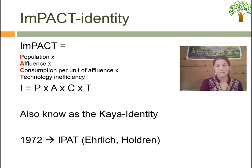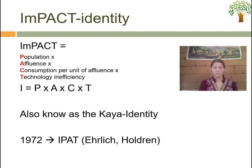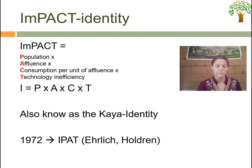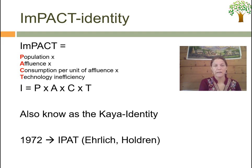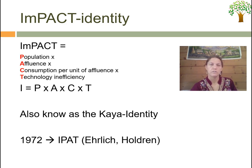Another name for the impact identity is the Kaya identity, based on the author who came up with it. Its basic origin comes back to the IPAT identity which Ehrlich and Holdren developed in 1972, but you can read more about this in Chauncey Ayers' book.